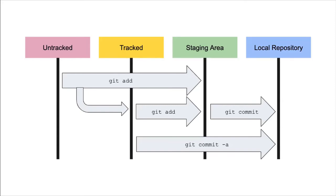So far we've recorded changes, but in a sense we've been pretty blind. We just remember in our head what each change is and we're recording it, trusting we remember well. The good thing is that Git can do a lot of that for us and we don't have to use our fallible memory for that.